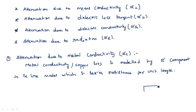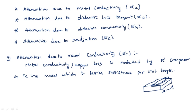Suppose if you are taking a metal microstrip transmission line, this is the microstrip transmission line where it is having a length L. The amount of resistance over this length is given as the R dash component, and the amount of R dash determines the attenuation due to metal conductivity.